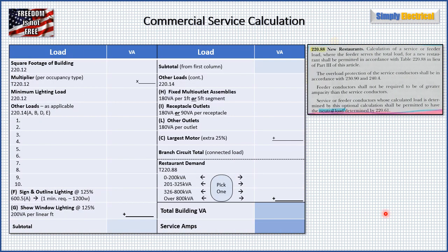First thing we're going to do is go to 220.88 and find new restaurants. This is where we go for the optional method for calculating a restaurant. It tells us that the calculation of a service or feeder load where the feeder serves a total load for a new restaurant shall be permitted in accordance with table 220.88, in lieu of part three of this article.